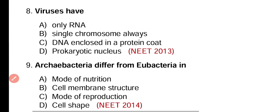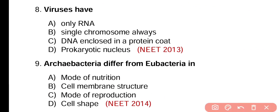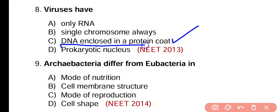Question number 8. Viruses have only RNA, single chromosome, always have DNA enclosed in protein coat, or have prokaryotic nucleus. The correct answer is option C. Viruses have DNA that is enclosed in a protein coat or capsid.